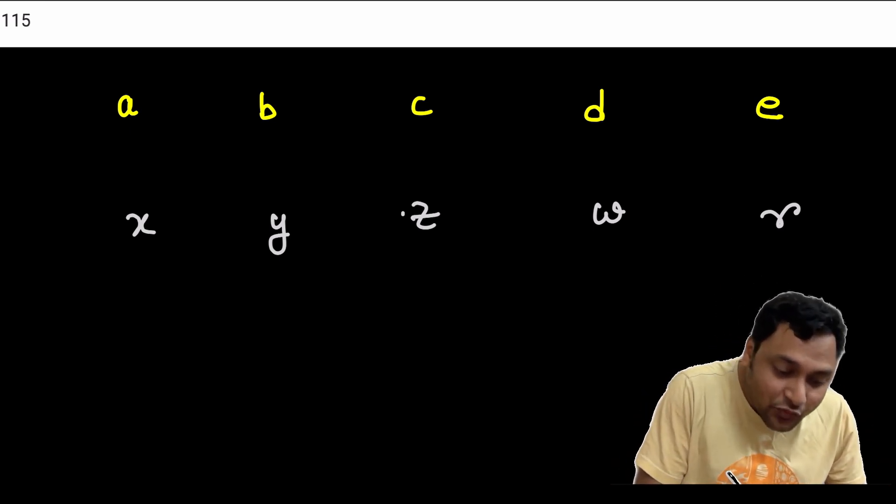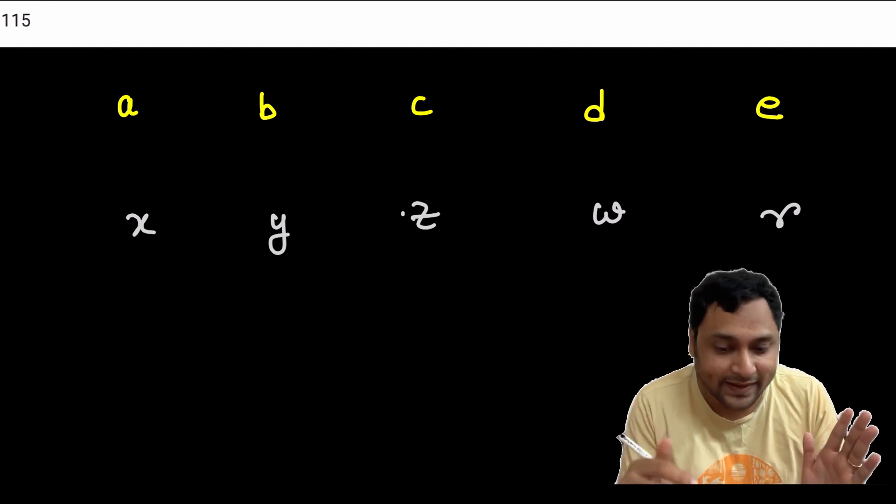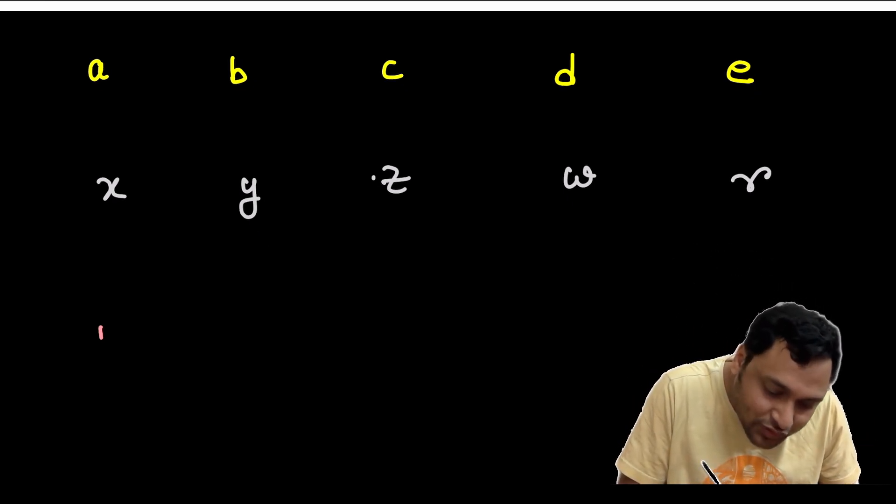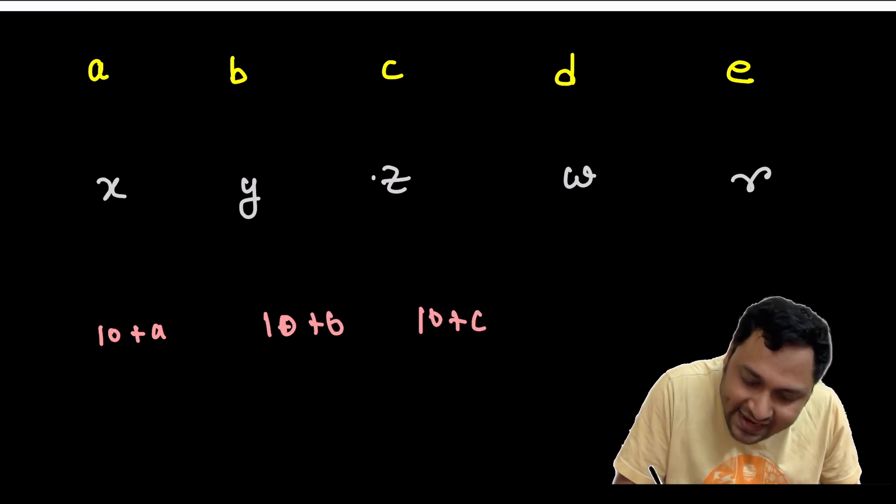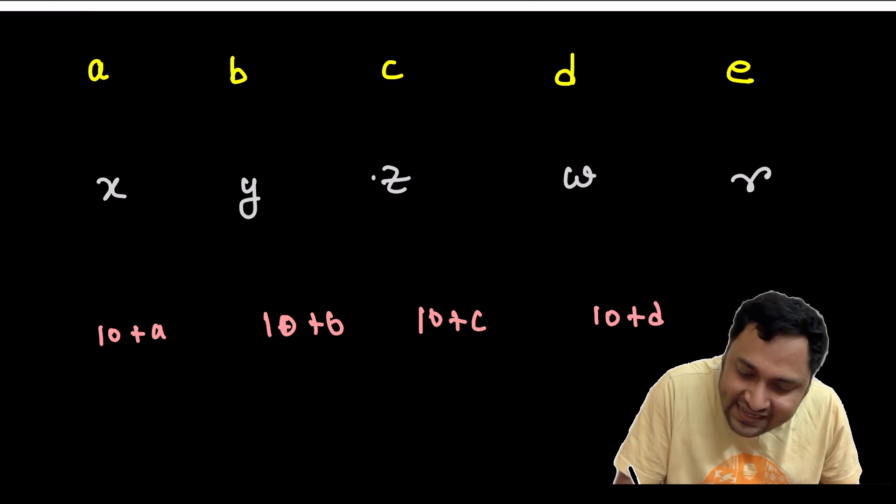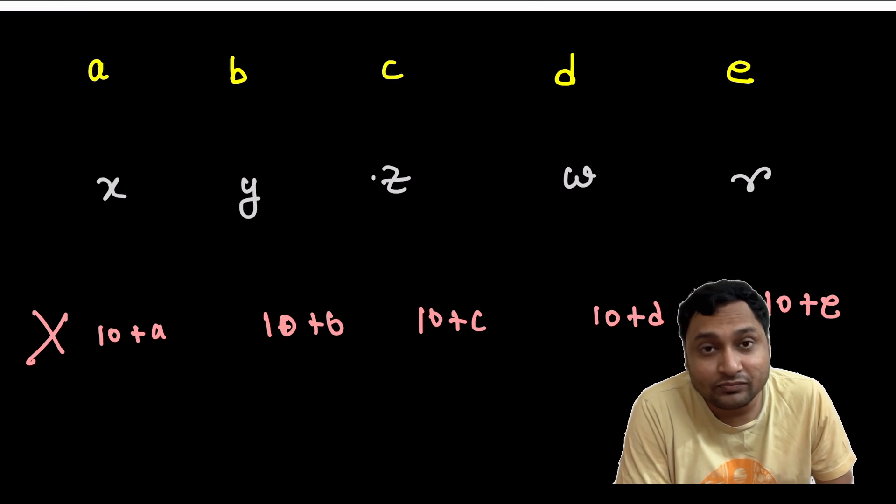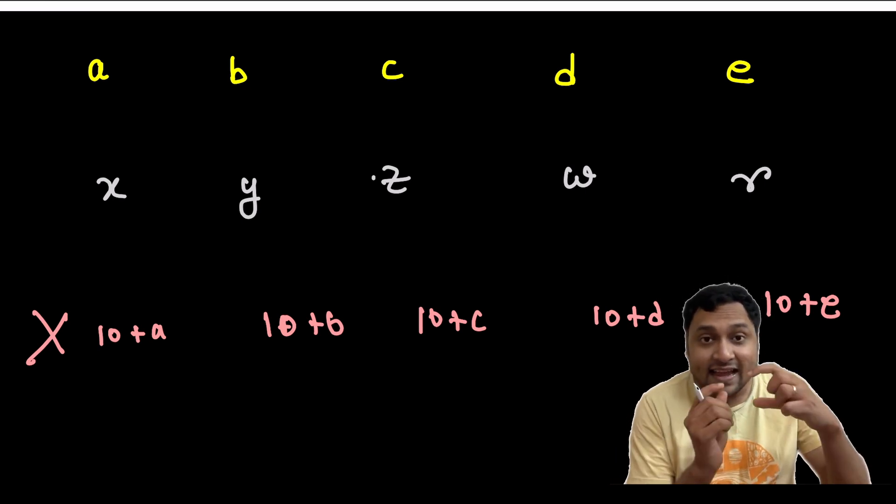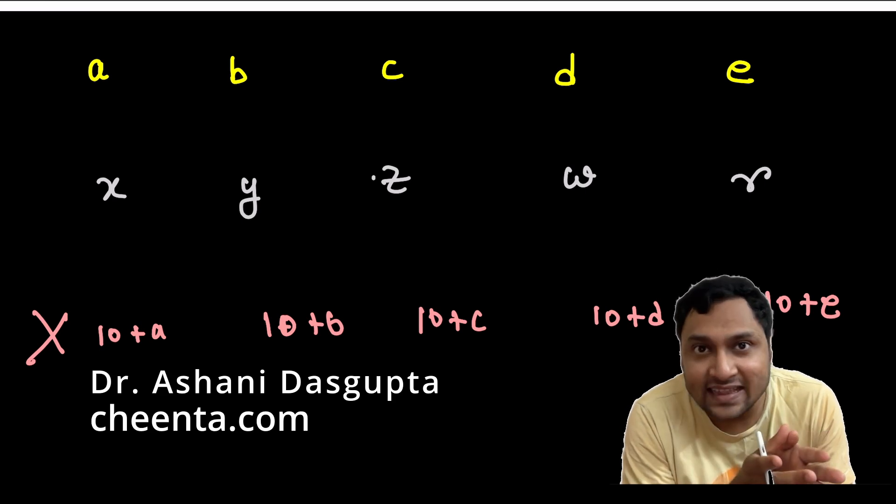Now, let's figure out what numbers we cannot choose from 11 to 20. We cannot choose 10 plus A, 10 plus B, 10 plus C, 10 plus D and 10 plus E. We are restricted to choose them because if we choose that, then there will be two chosen numbers whose difference is exactly 10.